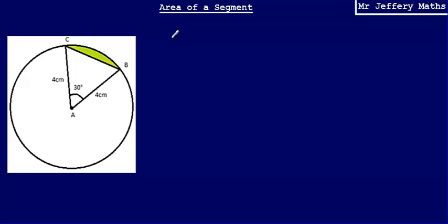Welcome to a video taking a look at calculating the area of a segment. In order to work out the area of the segment, which is this shaded part, I'm going to start by calculating the area of the sector — that pizza shape. Then once I've worked out the area of the sector, if I can work out the area of that triangle, I can subtract the two to work out what the area of that segment will be.